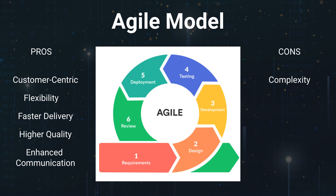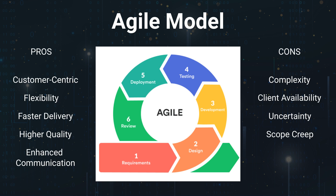Cons of the Agile Model: Complexity in Large Projects — Agile is well-suited for small to medium-sized projects, but in large, complex projects, managing multiple iterations can become challenging. Client Availability — Agile requires active client involvement throughout the project, which can be demanding on clients' time and availability. Uncertainty — Agile's adaptive nature may introduce uncertainty for stakeholders, who may be unsure about the final product until later in the development process. Scope Creep — the flexibility of Agile can lead to scope creep if not managed properly, as new features and changes can accumulate. Documentation — Agile often leans more towards working software than comprehensive documentation, which may lead to challenges in documentation-heavy industries or regulatory environments. The Agile model is highly effective when applied in the right context, but it's crucial to recognize its limitations and select the most suitable model for the specific project and organizational needs.